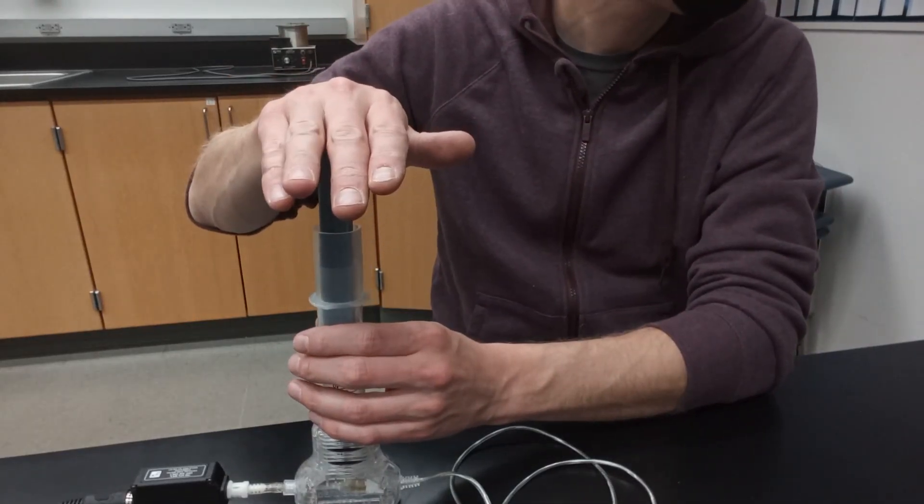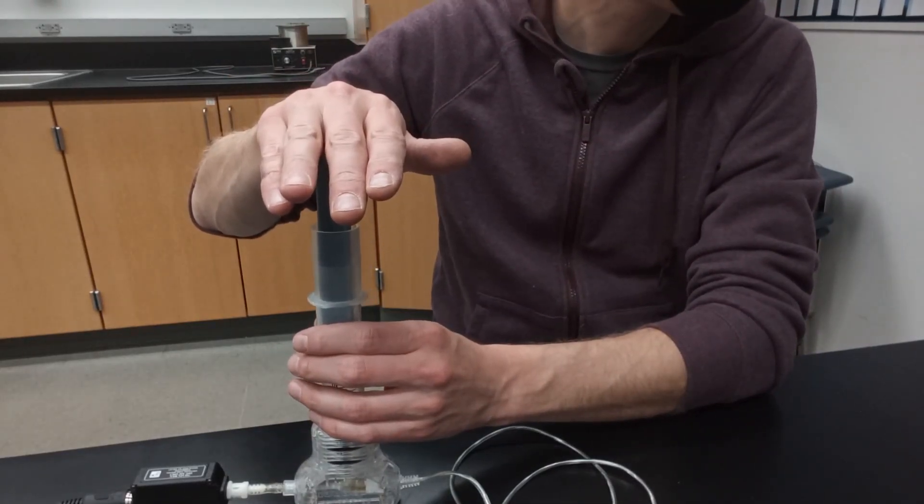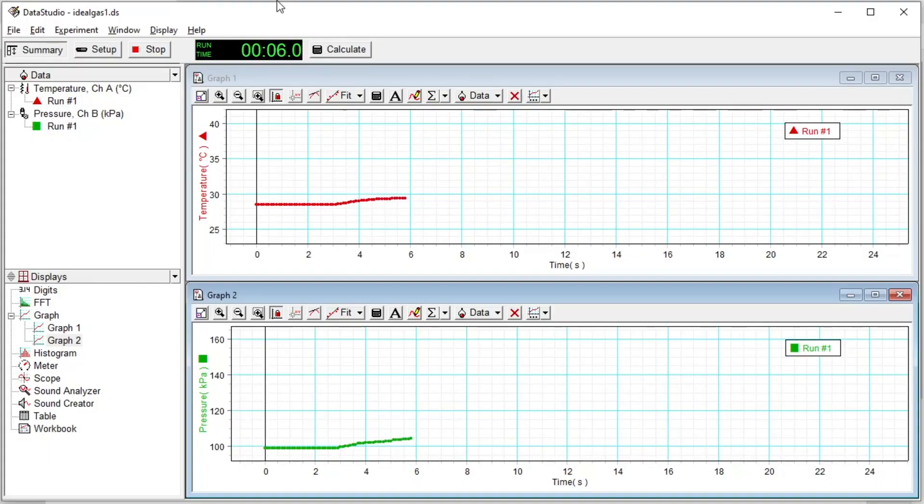For the first experiment, we'll compress the gas isothermically. To accomplish this, you compress the plunger slowly so that the gas inside stays roughly at the same temperature as the room.